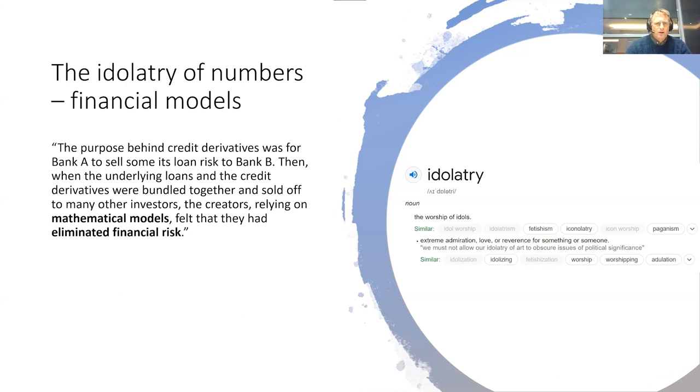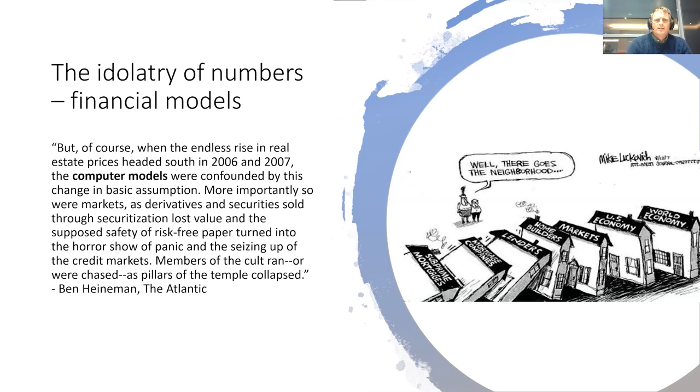If we take the 2008 financial crash, all these financial derivatives which were used to enable banks to swap credit risks between each other - they were all based on mathematical models which gave people the sense that they eliminated all financial risk. But of course, when the endless rise in real estate prices headed south, the computer models were confounded by this change in basic assumption. So more importantly, so were markets. As derivatives and securities sold through securitization lost value, and the supposed safety of risk-free paper turned into the horror show of panic and the seizing up of the credit markets, members of the cult ran or were chased as pillars of the temple collapsed.